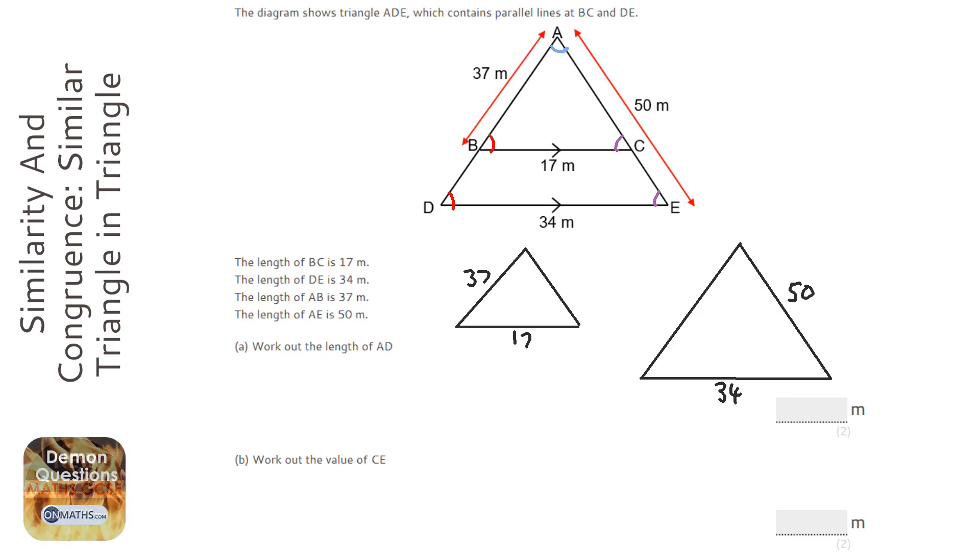And with enlargements, we're always thinking about scale factors. So we've got to find out what you times 17 by to get to 34. So on my calculator, I do 34 divided by 17. I probably shouldn't need to do it in the calculator. So obviously the answer is 2.